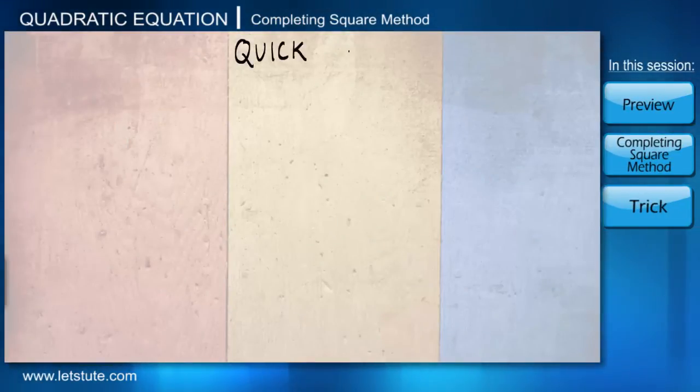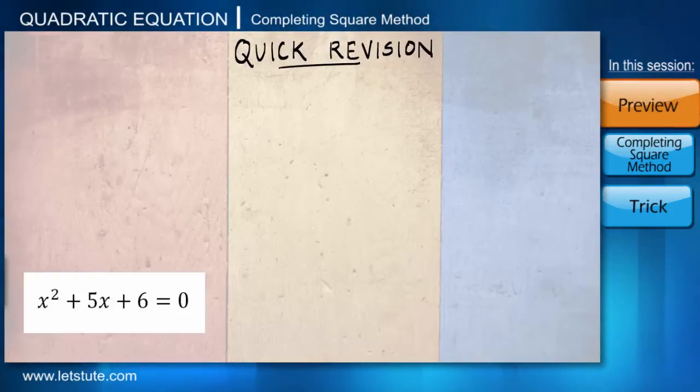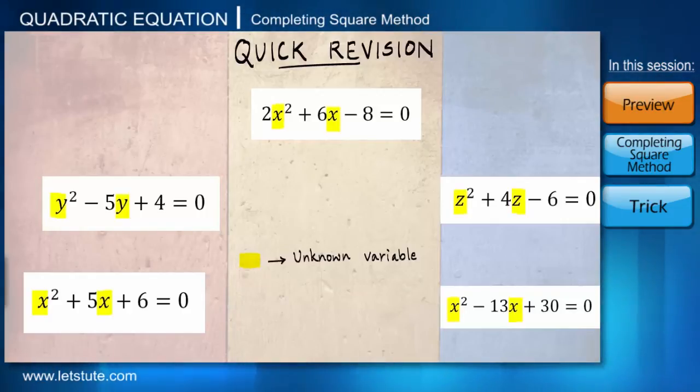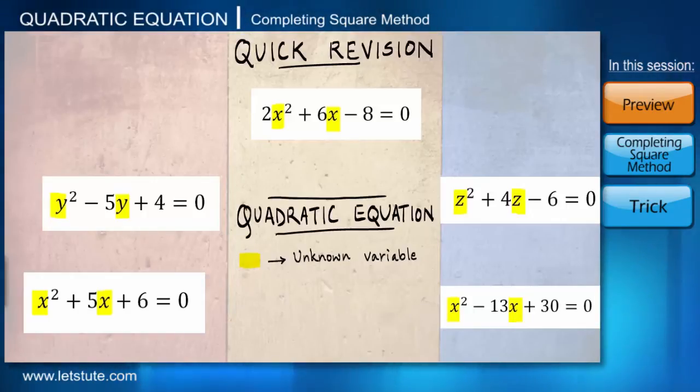Before we start with this session, let us quickly look into all that we know till this point. We learned about equations that contain unknown variables, denoted by letters like x, y, or z. These equations are named quadratic equations whenever the highest power of the variable is 2.